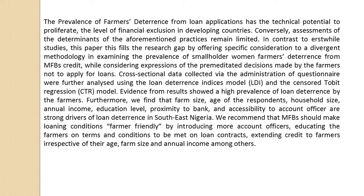In contrast to erstwhile studies, this paper fills the research gap by offering specific consideration to a divergent methodology in examining the prevalence of smallholder women farmers' deterrence from MFB's credit, while considering expressions of the premeditated decisions made by the farmers not to apply for loans. Cross-sectional data collected via the administration of questionnaires were further analyzed using the Loan Deterrence Indices Model (LDI) and the Censored Tobit Regression Model.